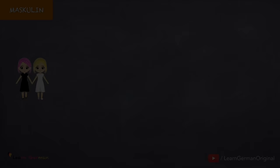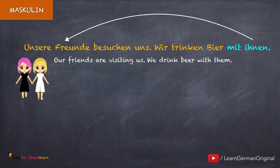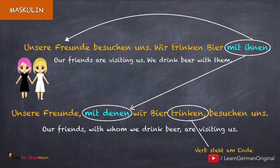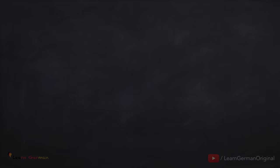Und hier ist jetzt ein Beispiel mit einer Präposition. Unsere Freunde besuchen uns. Wir trinken Bier mit ihnen. In dem Relativsatz benutzen wir die Präposition mit dem Relativpronomen für Plural im Dativ, das heißt 'denen': Unsere Freunde, mit denen wir Bier trinken, besuchen uns. Das Verb steht am Ende.